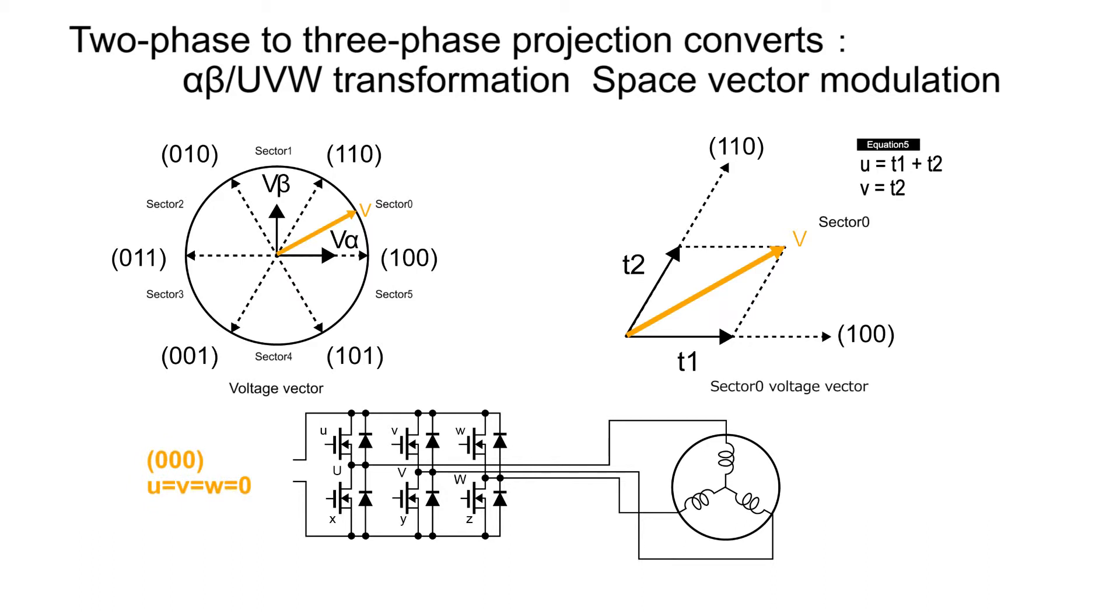The vector 000 means U, V, and W are all 0. That is, all the upper transistors in an inverter circuit are off. Therefore, the inverter circuit cannot supply current to a motor. On the other hand, 111 is U equals V equals W equals 1. Reversal input is X equals Y equals Z equals 0 at this time. In other words, all the three lower transistors in the inverter circuit are off. Again, the inverter circuit cannot supply current to a motor. Therefore, 000 and 111 are the operation which nothing performs toward a motor.